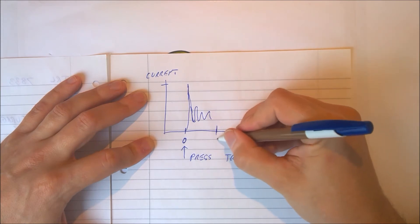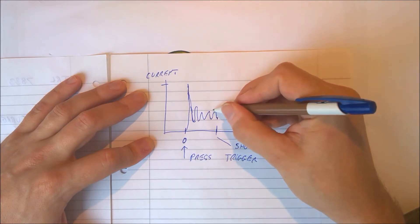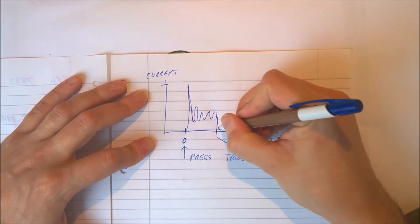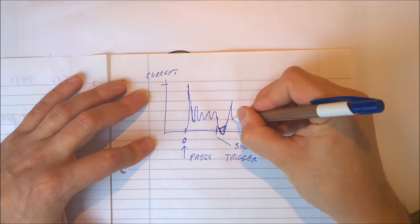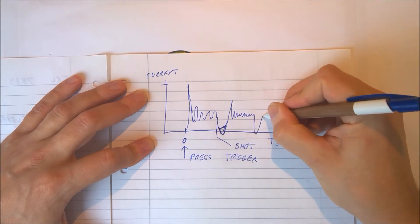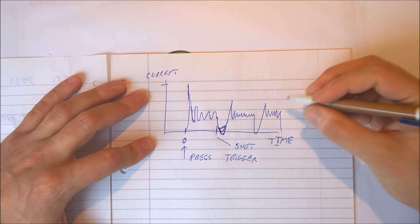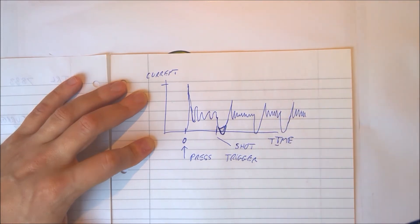The current will fluctuate a little bit. Then at some point in time we get a shot. Just when we get the BB coming out of the barrel, the spring releases and there is no tension on the motor. The current drops almost to zero, sometimes even below zero. Then the motor starts spinning up and we have the same cycle again. For each shot we have a little bit less of a spike until we reach a point where the cycle just repeats itself over and over for each shot.